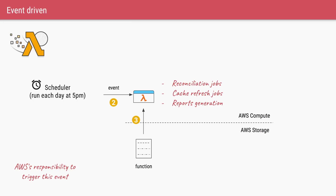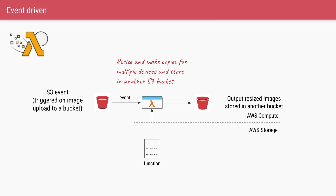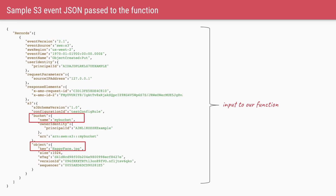Another use case: if you allow users to upload high-resolution images and want to resize them for different device sizes — mobile, tablet, desktop — you can use an S3 bucket and configure AWS to generate an S3 event whenever an image is uploaded. You don't need to run your function 24/7. As soon as there is an image in the bucket, an event is generated and, since it's tied to your function, the function is deployed on demand, processes the image, creates multiple copies for different devices, and stores them back into a different S3 bucket.